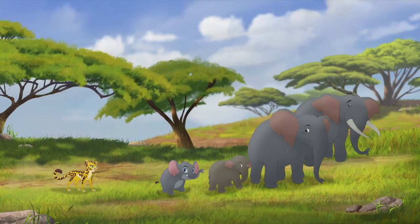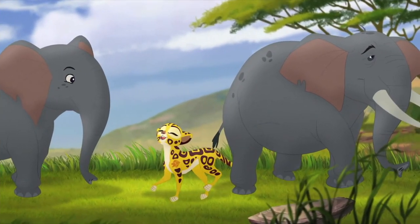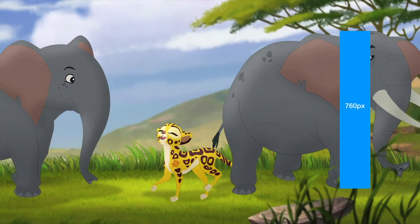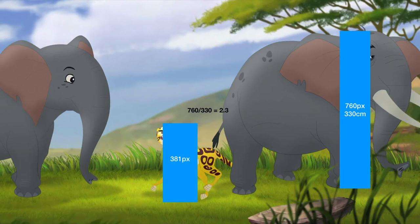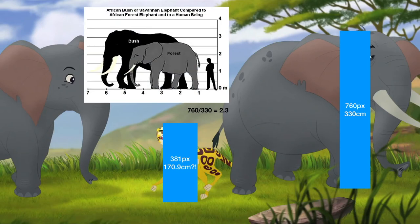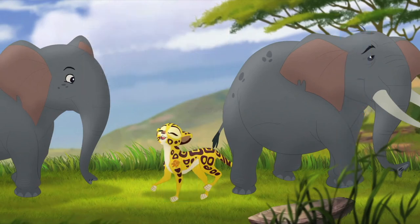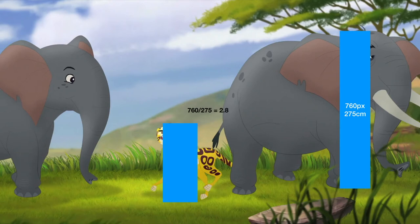This image shows Fuli close to some elephants. I'm going to compare with the first elephant as he is clearly the most senior and will be close in size to an adult African elephant at 330cm. Initially this gives Fuli's height as 170.9cm, which can't be right. A possible solution is that these are actually forest elephants, not bush elephants — forest elephants are smaller at around 275cm tall. Using 275cm, the 760 pixels represents that height, and Fuli's 381 pixels comes out to around 136.1cm. Much more reasonable.